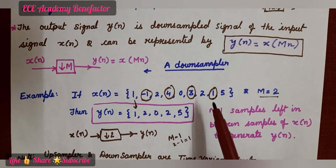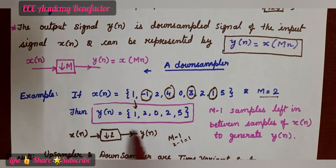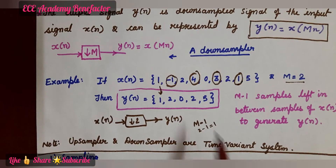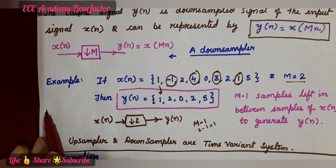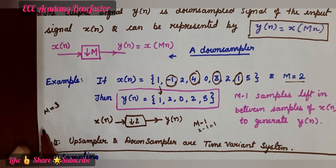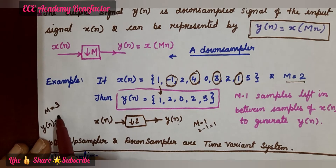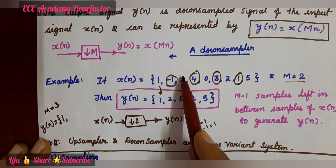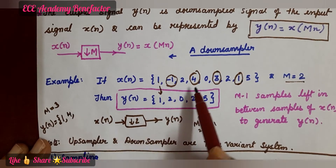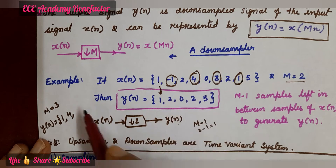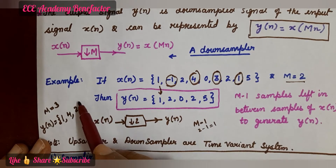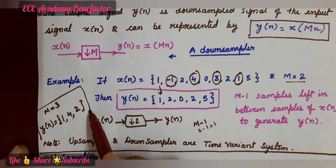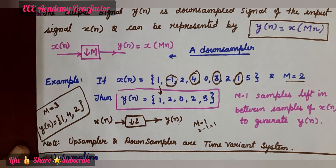This is how we find the downsampling of the given input signal. Suppose if it is downsampled by 3, what will be the output signal y of n? The first sample is written as it is and leave M minus 1 — that is 3 minus 1 equals 2 samples. So we leave 2 samples each time. The result is: 1, 4, 2, and 5. So we are leaving 2 samples in between.